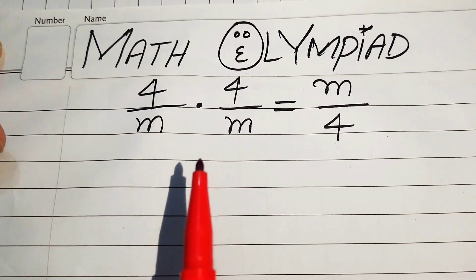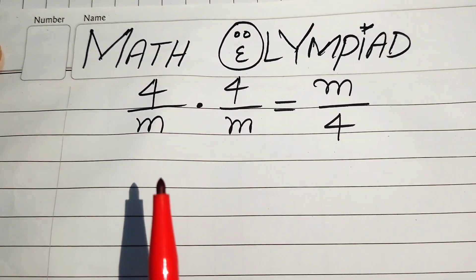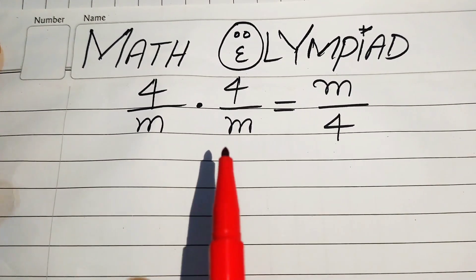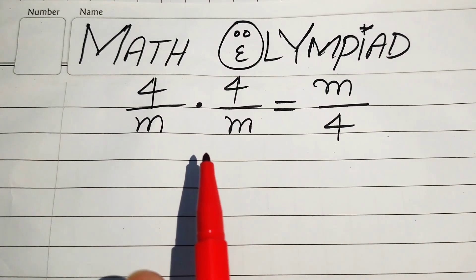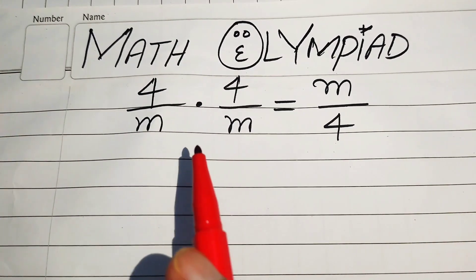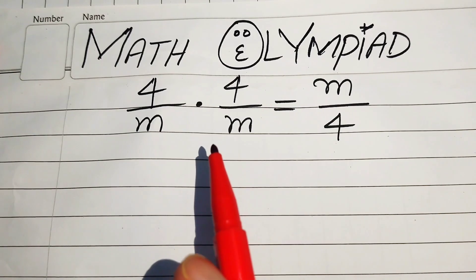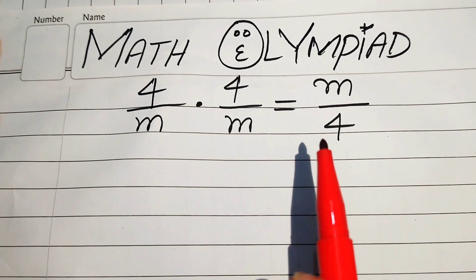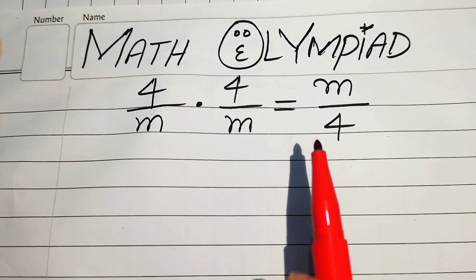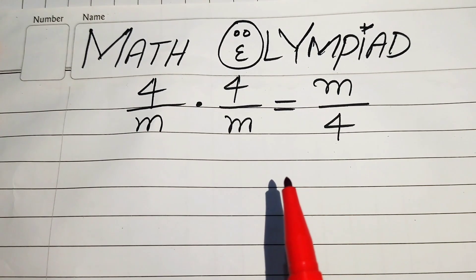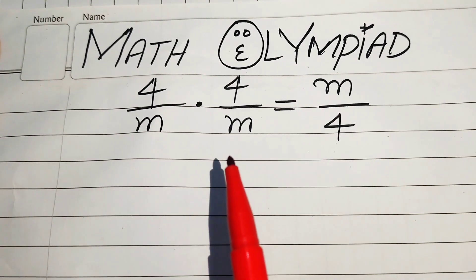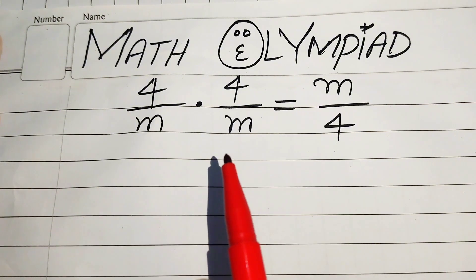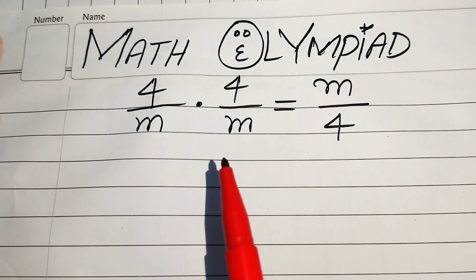Hello everyone, welcome back to Math Olympiad channel. Here we have (4/m) × (4/m) = m/4, and we solve this problem for the values of m.